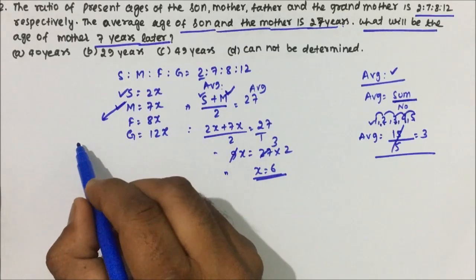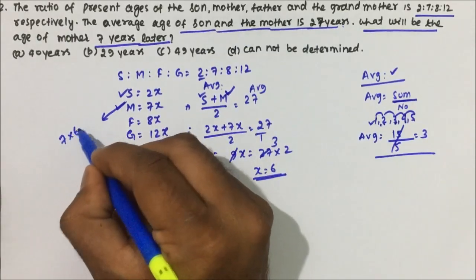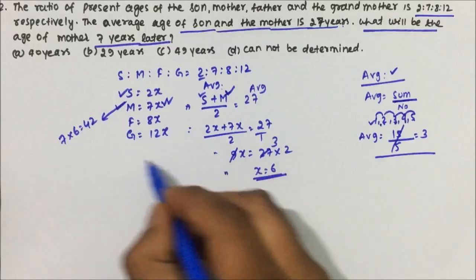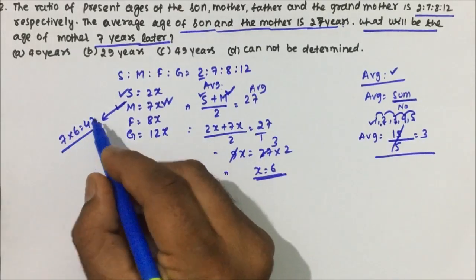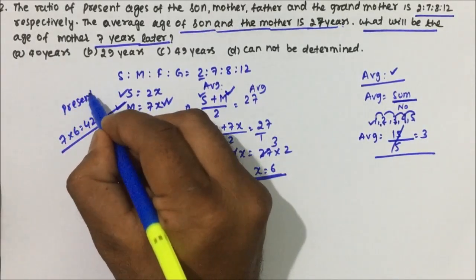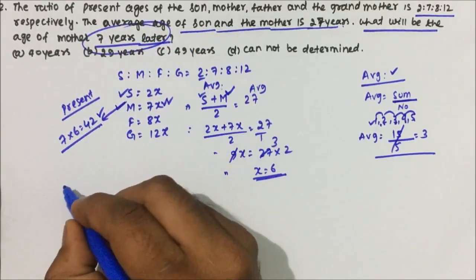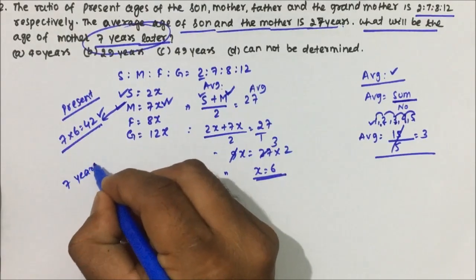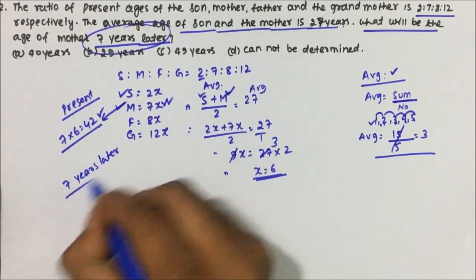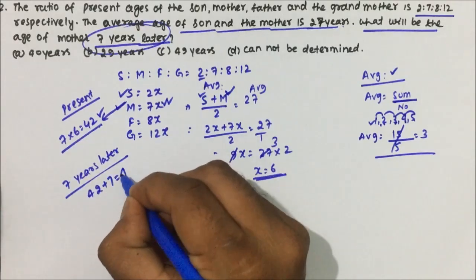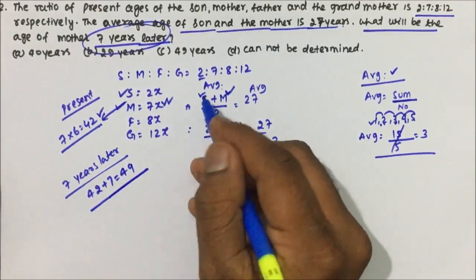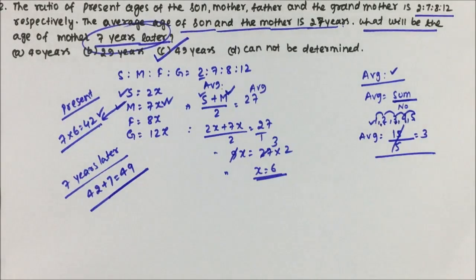The present age of mother is 7x = 7 × 6 = 42. But the question asks what will be the mother's age 7 years later, so 42 + 7 = 49 years. Option C is the correct answer. I hope you understood the concept of ages and the questions based on ratio. Thanks for watching the video.